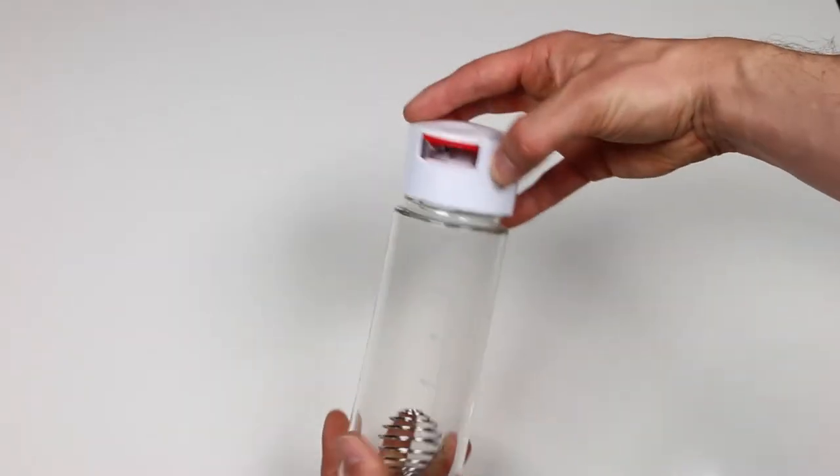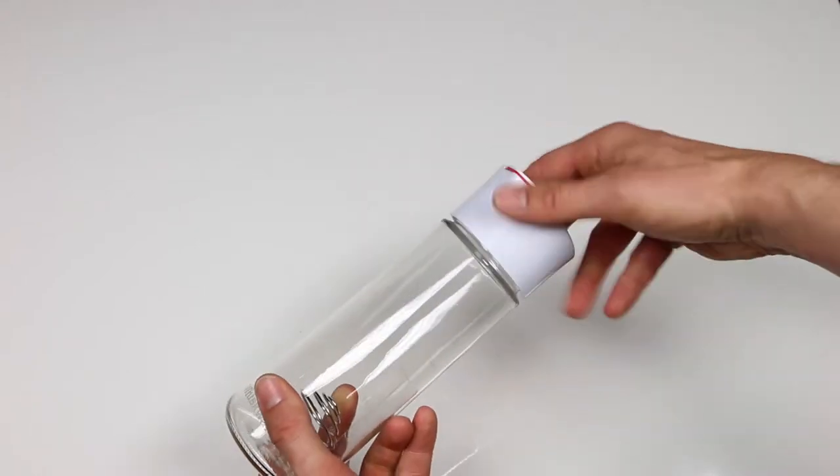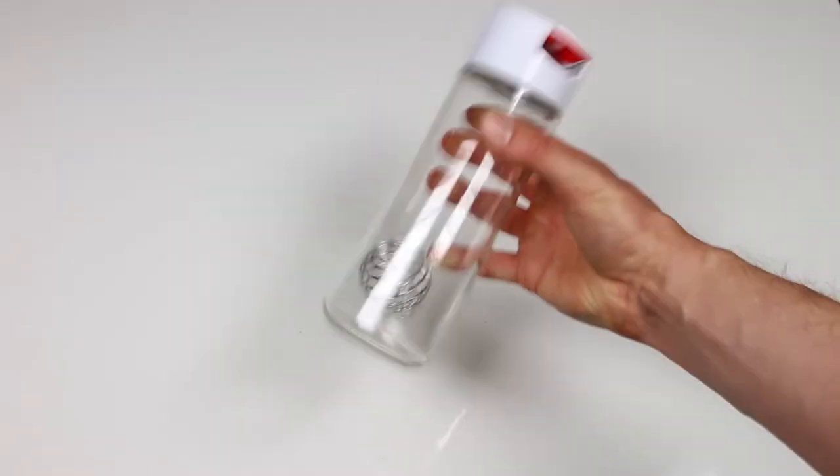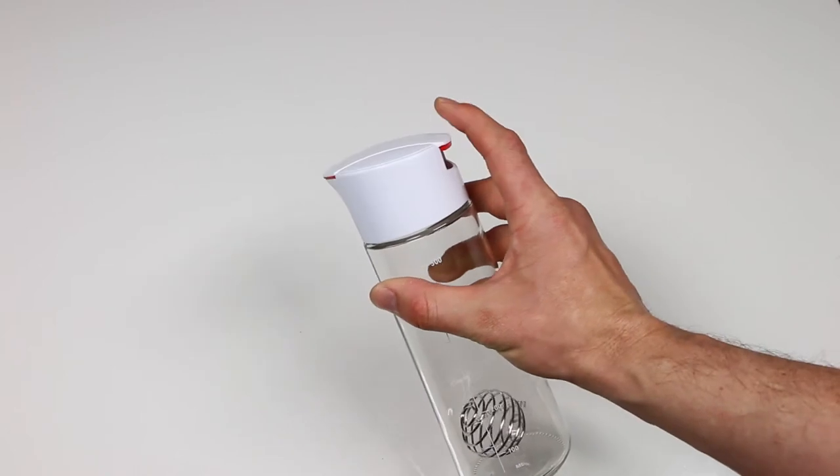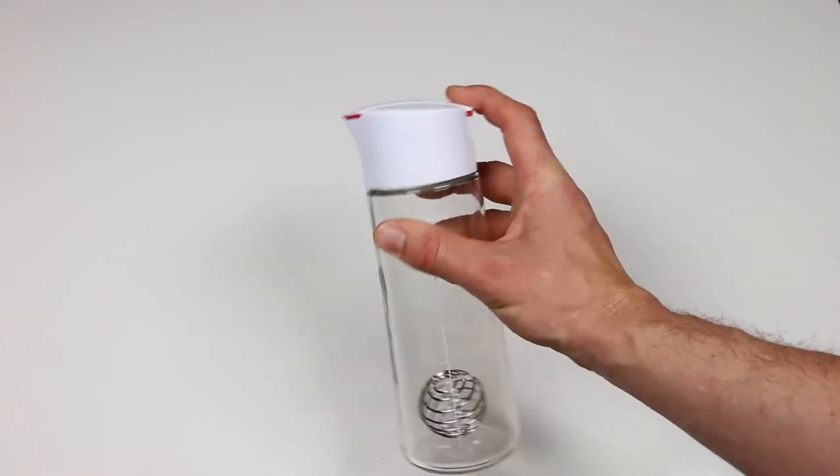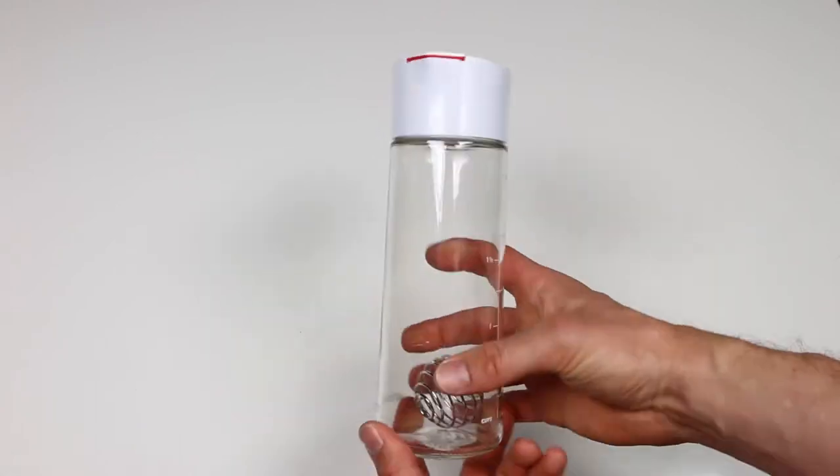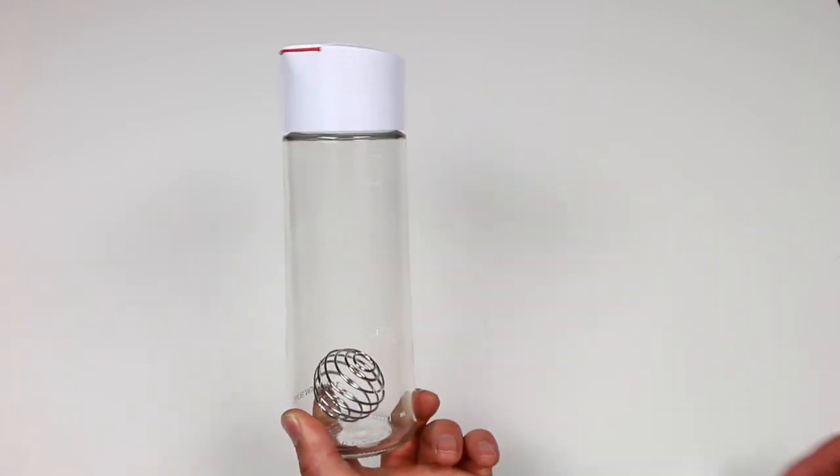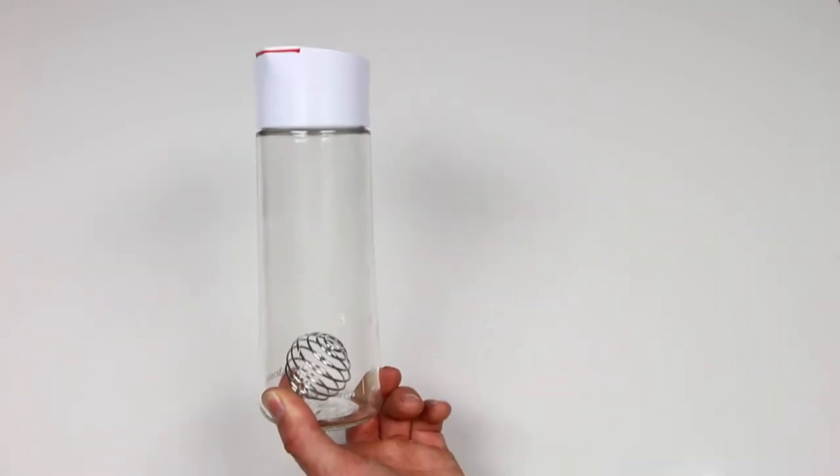Now, the manufacturer states that the blender ball is powerful enough to keep oil and vinegar mixed together for up to an hour. The lid is an easy open and close spout that auto closes and seals whenever the lever is released. There are also printed markings in cups and milliliters to make it easy to measure ingredients.